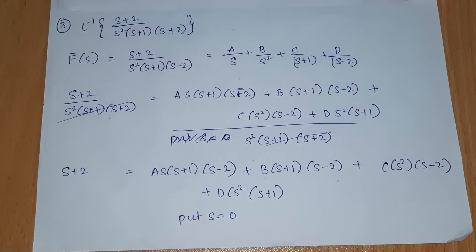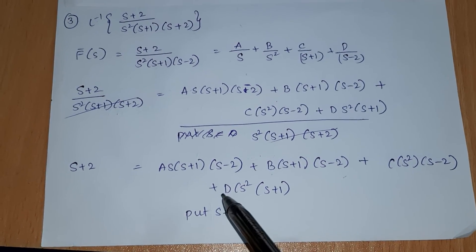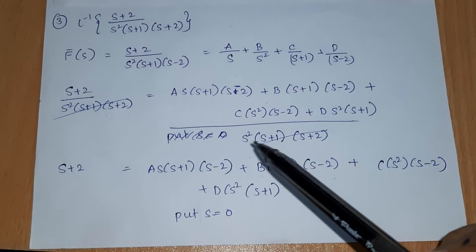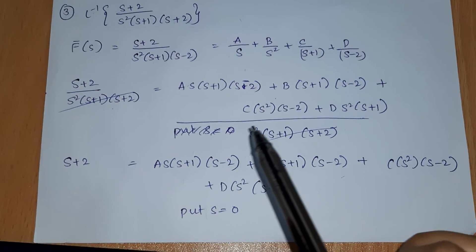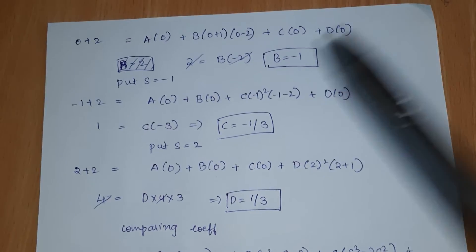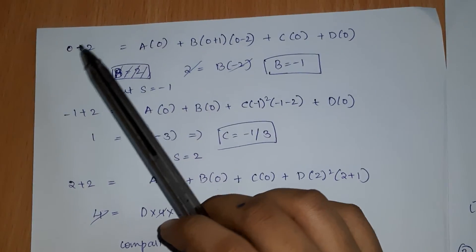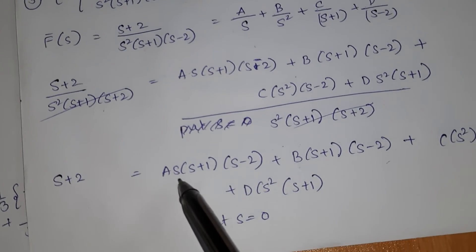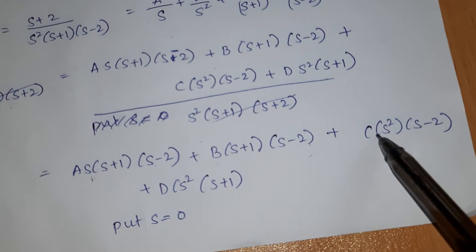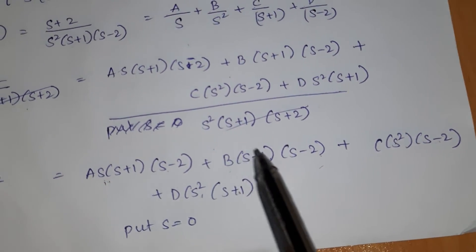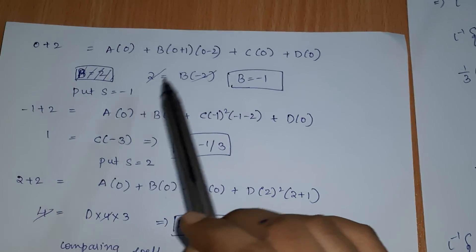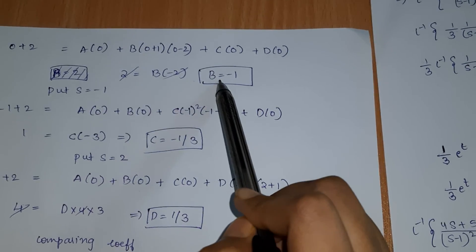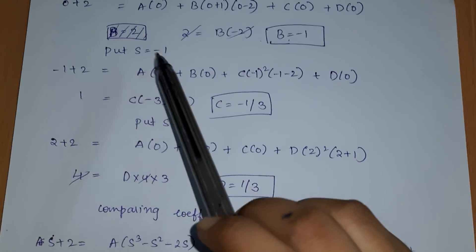We will use the substitution technique. Put s = 0. When s = 0, the terms with A, C, and D all become zero. Only the B term remains: B·(0+1)·(0-2). So 2 = B·(1)·(-2) = -2B, which gives B = -1.